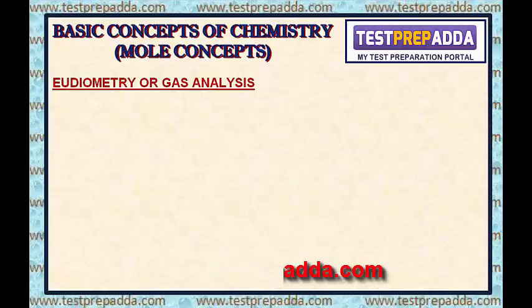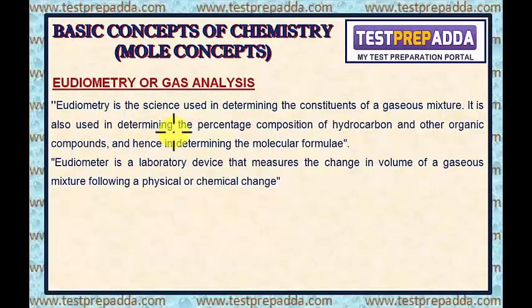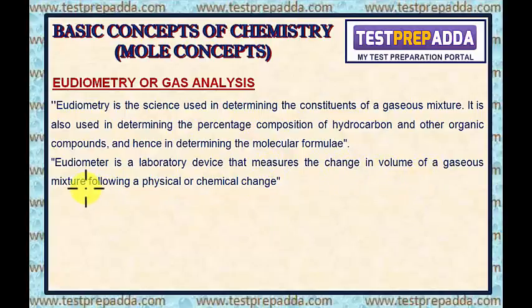First of all, what is eudiometry and why do we study this? Eudiometry is the science used in determining the constituents of a gaseous mixture. It is also used in determining the percentage composition of hydrocarbon and other organic compounds, and hence in determining the molecular formula. This is done with the help of a eudiometer.